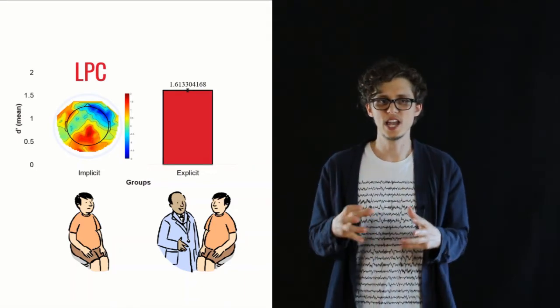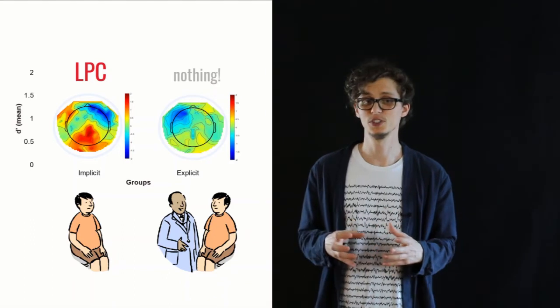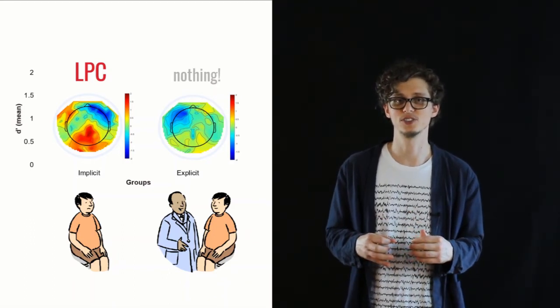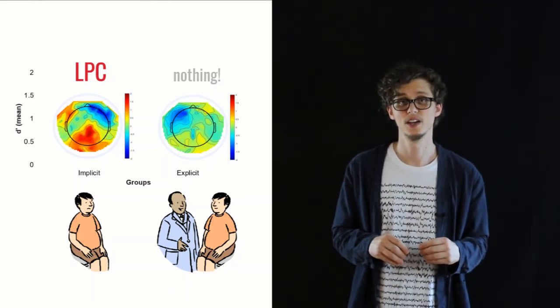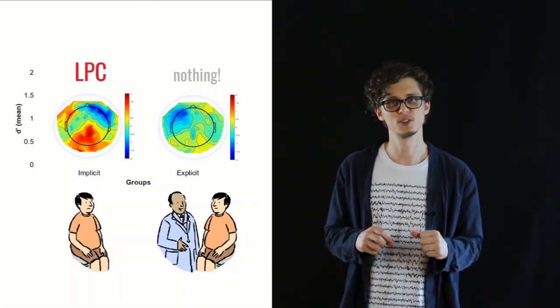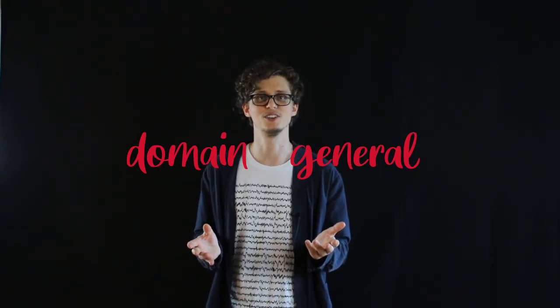That's really cool, because even though their accuracy wasn't that high, they did still internalize this rule, and they are treating it in the same way they treat the rules of their own native language — they've really learned it. When we look at the explicit group, we don't see any kind of brain response. They don't even have the categorization response, which was really surprising to us. We still don't know exactly why. The fact that we don't see an LPC means that even though they learned the rule and their accuracy is very high, they're still not processing it the same way they would process a rule in their native language. They were told the rule explicitly — they were given a cheat, a workaround. They don't have to figure out the rule for themselves and don't have to process it the same way they process the rules they learned as babies.